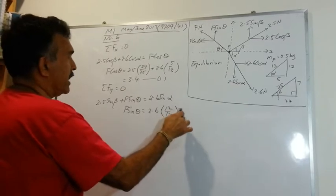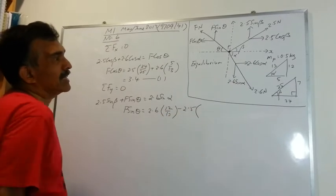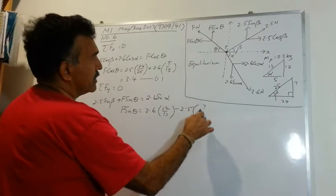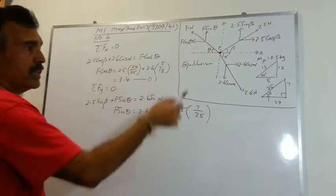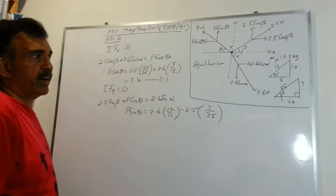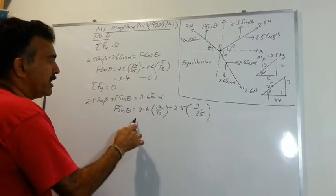So we can write F sin theta equals 2.6 times 12 over 13, and I have to minus 2.5 sin beta will be 7 over 25.